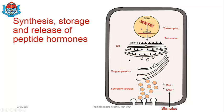This diagram tells a lot about the synthesis, storage, and release of peptide hormones. They are synthesized as pre-hormones — inactive hormones — then packaged within the Golgi apparatus where they become active hormones, and stored until release. They cannot be released until a stimulus arrives; for example, high blood glucose is a stimulus that causes exocytosis of secretory vesicles, resulting in insulin being released. These are the characteristics of protein and peptide hormones.